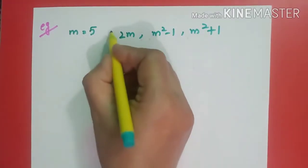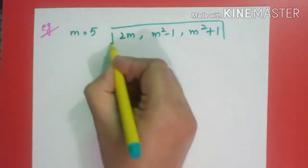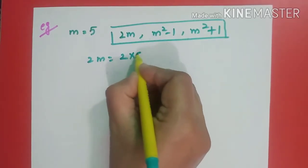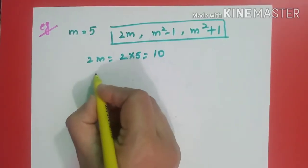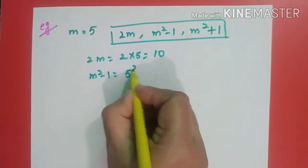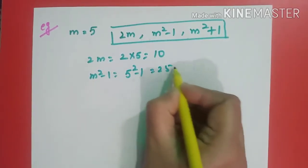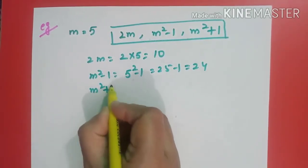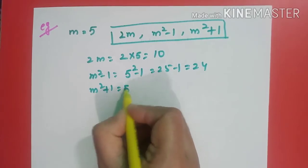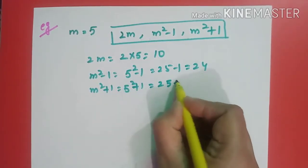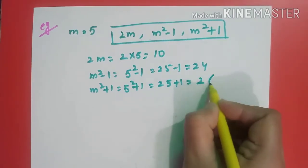Here I am having m as 5 and I am going to find the Pythagorean triplet. Now I am going to put the value of m in this. 2m, what will happen? 2 multiplied by 5 gives me 10. m square minus 1: 5 square minus 1, 25 minus 1, 24. m square plus 1: 5 square plus 1, 25 plus 1 is equal to 26.